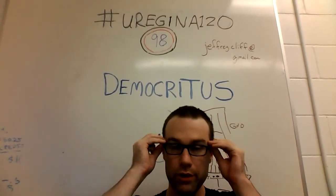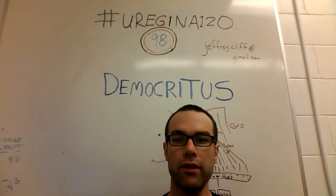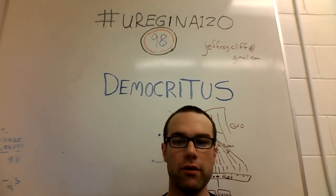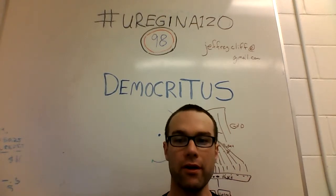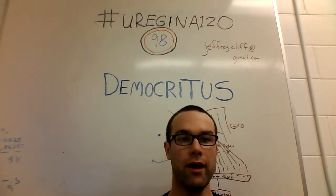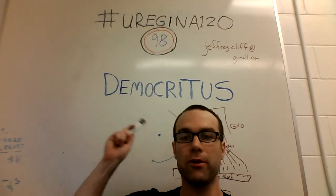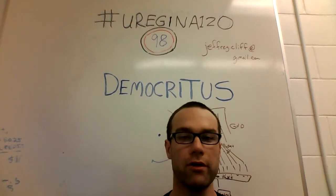Welcome back to Regina 120. I'm Jeff Cliff, and this is a series of 120 videos of things that I learned as a student at the University of Regina as part of a computer science degree. Today we're going to be talking about the father of modern science, Democritus.